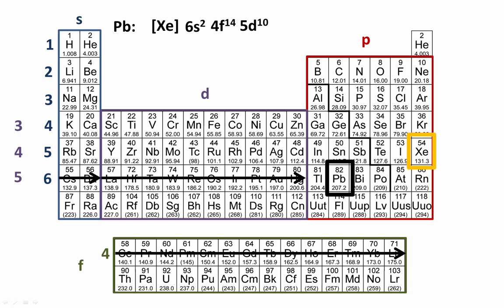And there are 2 electrons in the 6p subshell. So the shorthand electron configuration is [Xe] 6s² 4f¹⁴ 5d¹⁰ 6p².